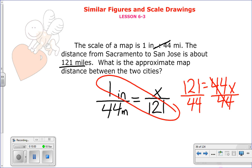And I get, if I check it out, 121 divided by 44 is 2.75 hundredths of an inch. Because again, we're trying to find the approximate map distance. So, that is what it would show on a map. It would be about 2.75 hundredths of an inch away from those two cities.